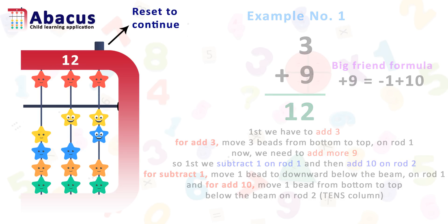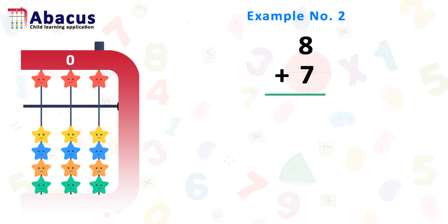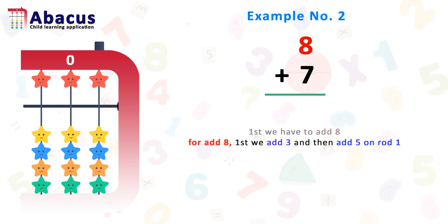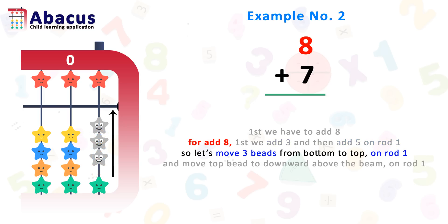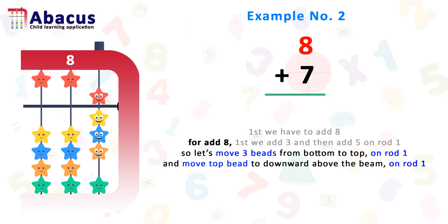But wait — you have to reset the abacus. Here is example number 2: 8 plus 7. First we have to add 8. For adding 8, we first add 3 and then add 5 on rod 1. So move 3 beads from bottom to top on rod 1, and then move the top bead downward above the beam on rod 1.